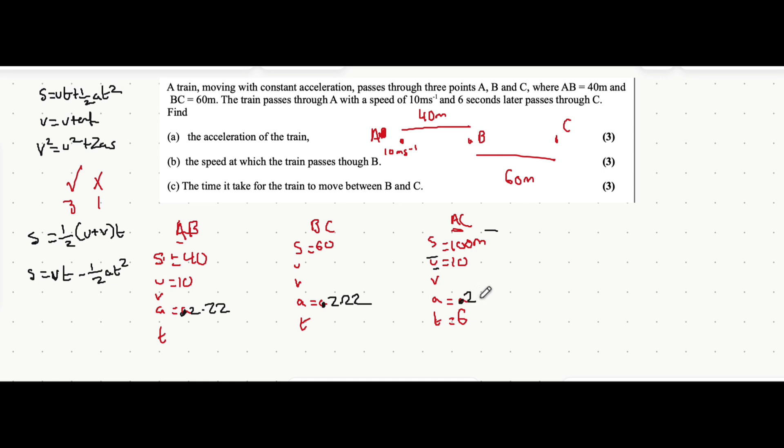Now we can move on to part b. Part b is asking for the speed at which the train passes through B. There are two ways you can do this - you can find the final velocity of the A to B journey, or the initial velocity of the B to C section. In this case it makes sense to use A to B because we have three known variables and one unknown which is velocity.